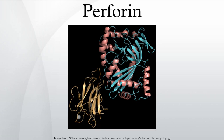Homozygous inheritance of defective PRF1 alleles results in the development of familial haemophagocytic lymphohistiocytosis type 2, a rare and lethal autosomal recessive disorder of infancy.